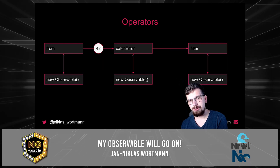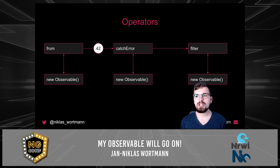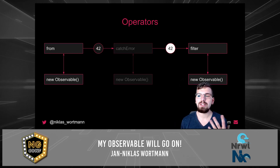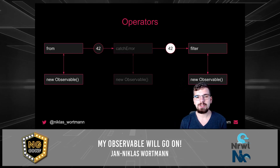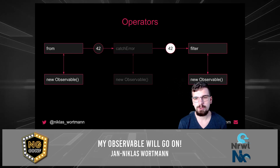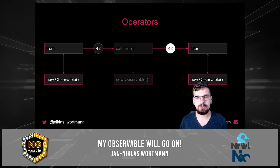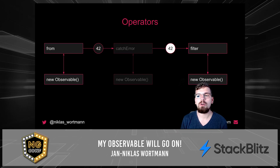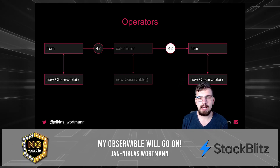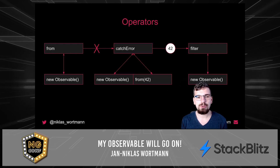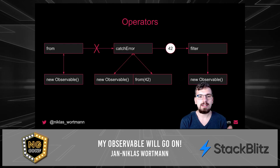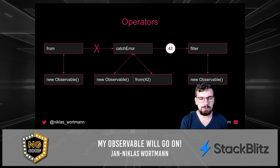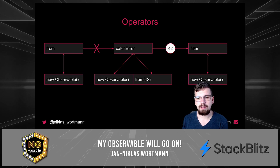If we have catchError in the pipeline, for example, catchError just passes through values coming from a next emission but ignores them entirely. So there's nothing happening with the value emission coming from the from operator — it's passed through catchError to be processed by the filter operator or every operator after catchError. The same goes for errors: catchError is the error operator from RxJS, so every error that happens in an observable pipeline is handled by catchError.